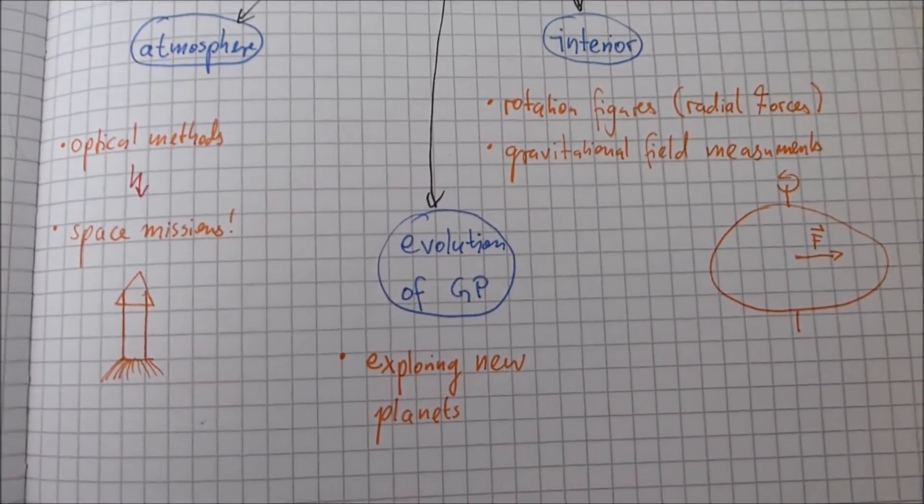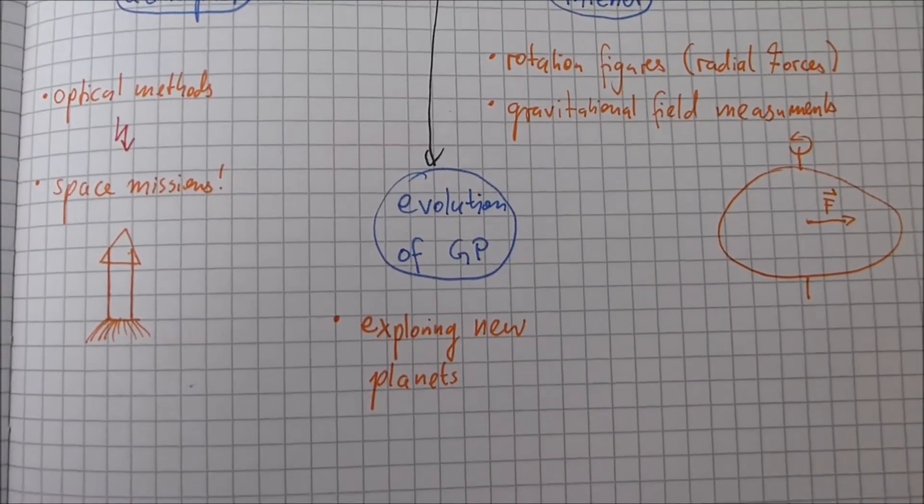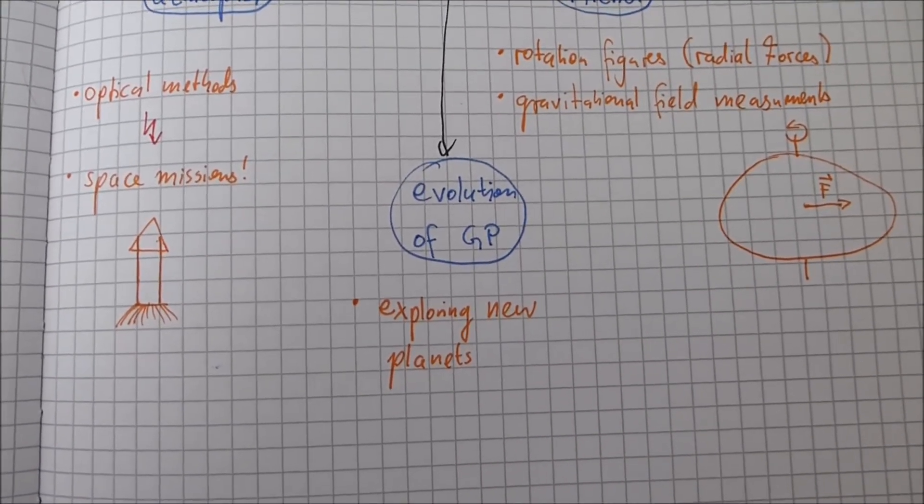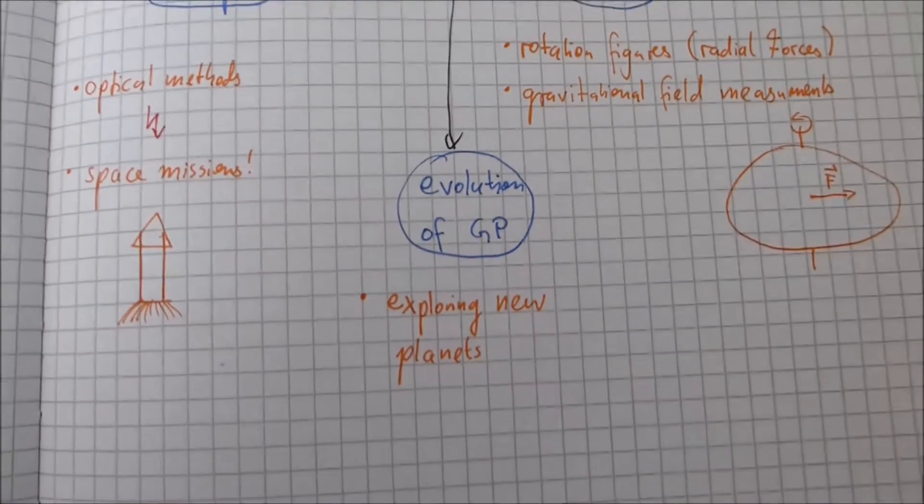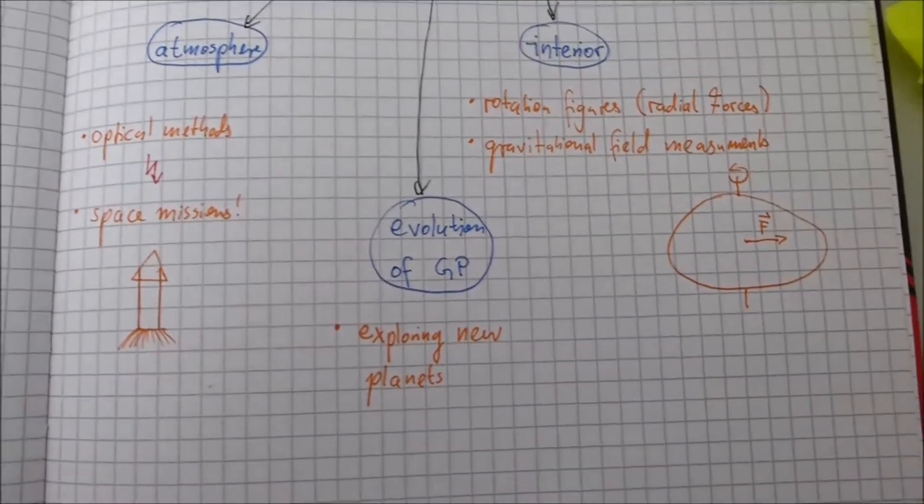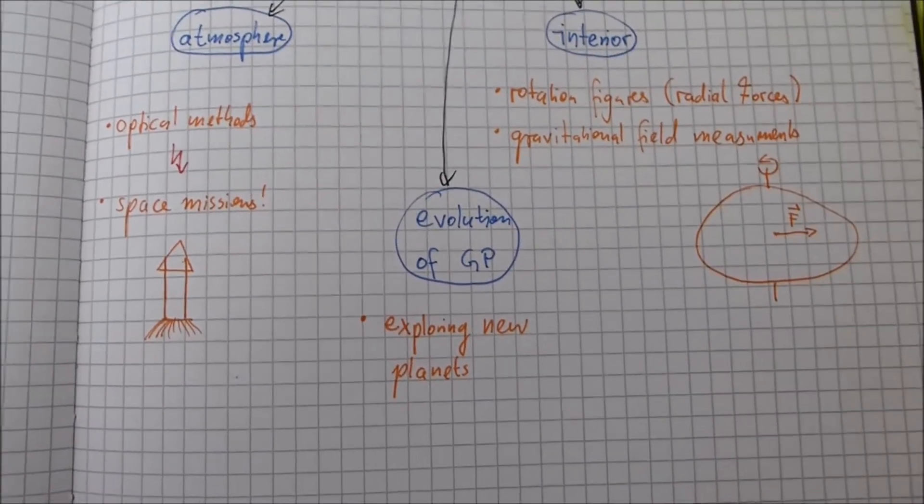And the third thing is evolution of giant planets. And here a big help is to explore new planets and look in which state they are. And then we can think about the evolution of Jupiter, for example.